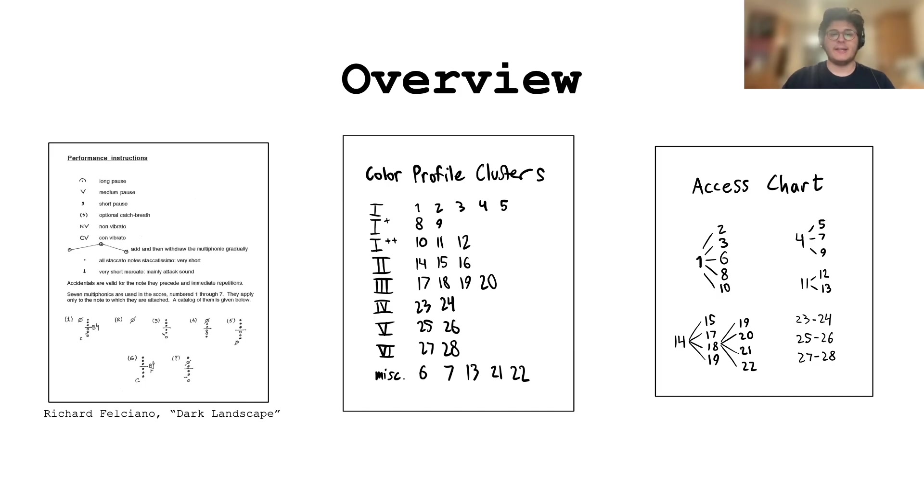We then systematically tested for multiphonics with adjacent fingerings to these seven, meaning a difference of at most one key. In total, we found about six clusters with similar color profiles, or multiphonics with roughly similar partial compositions, including two adjacent clusters and some miscellaneous sounds. The numbers shown are those assigned to particular English horn fingerings. The access chart shows which multiphonic fingerings were found to be adjacent to each other with a difference of at most one key. These were found to be very easy to tremolo between.